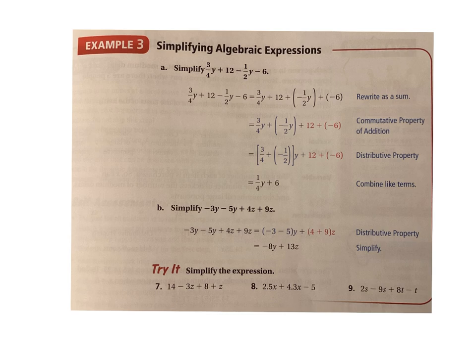This is 3.1, part 2. I'm going to start with simplifying algebraic expressions. Now that we know what terms are and what like terms are, we just have to put the like terms together. Some terms will go together and some won't. Only the like ones can be put together and simplified.